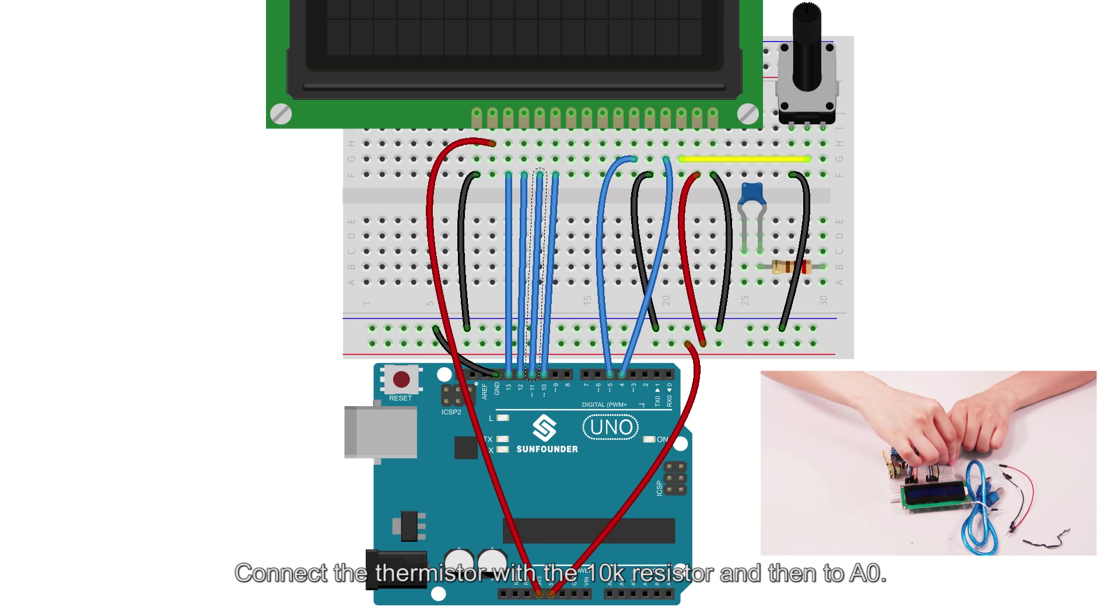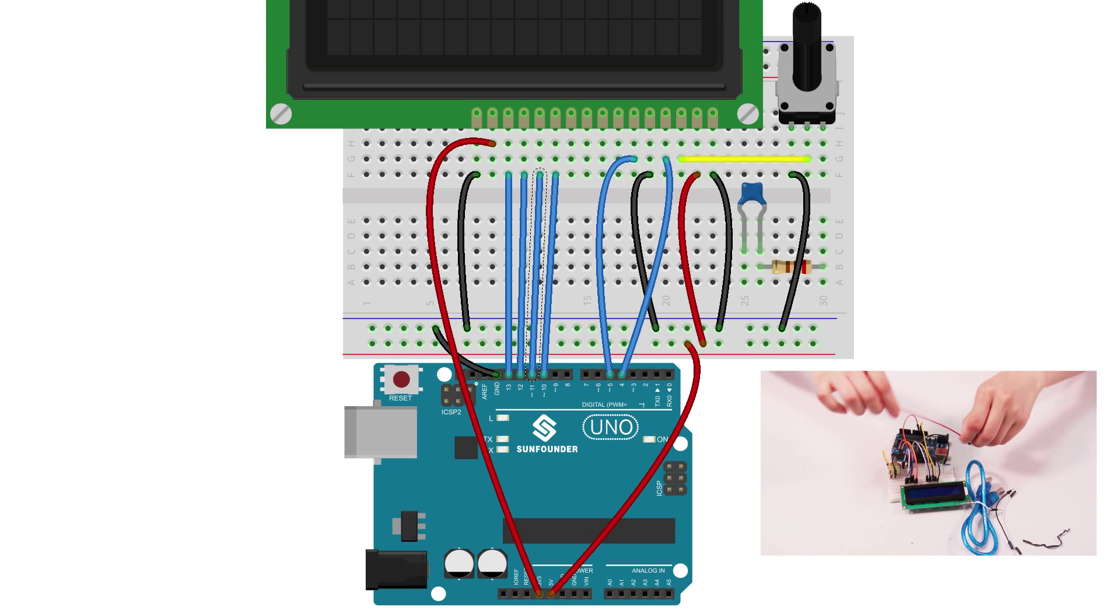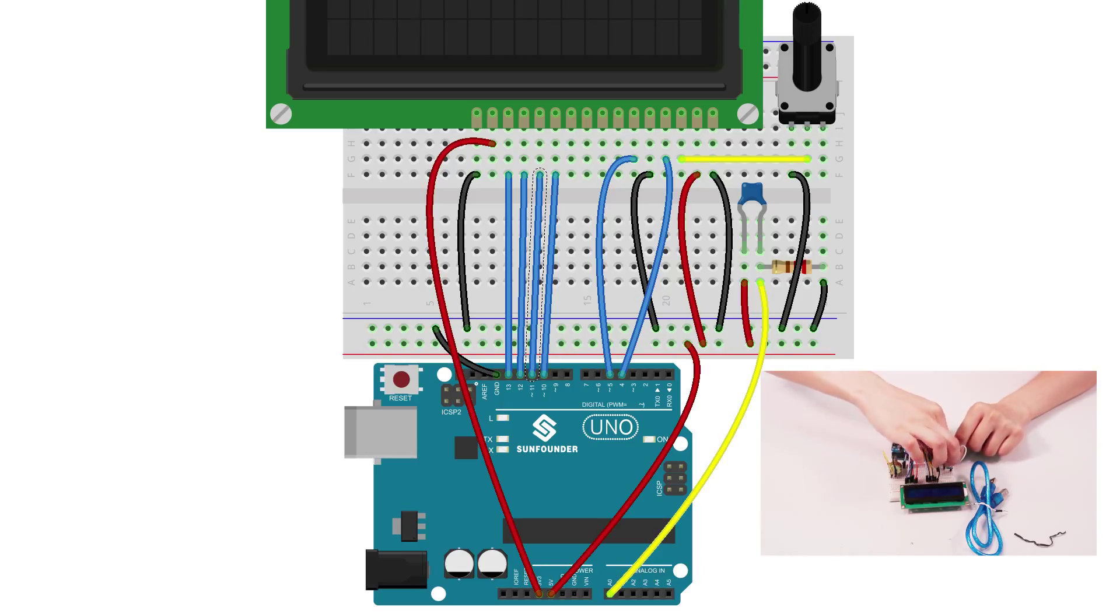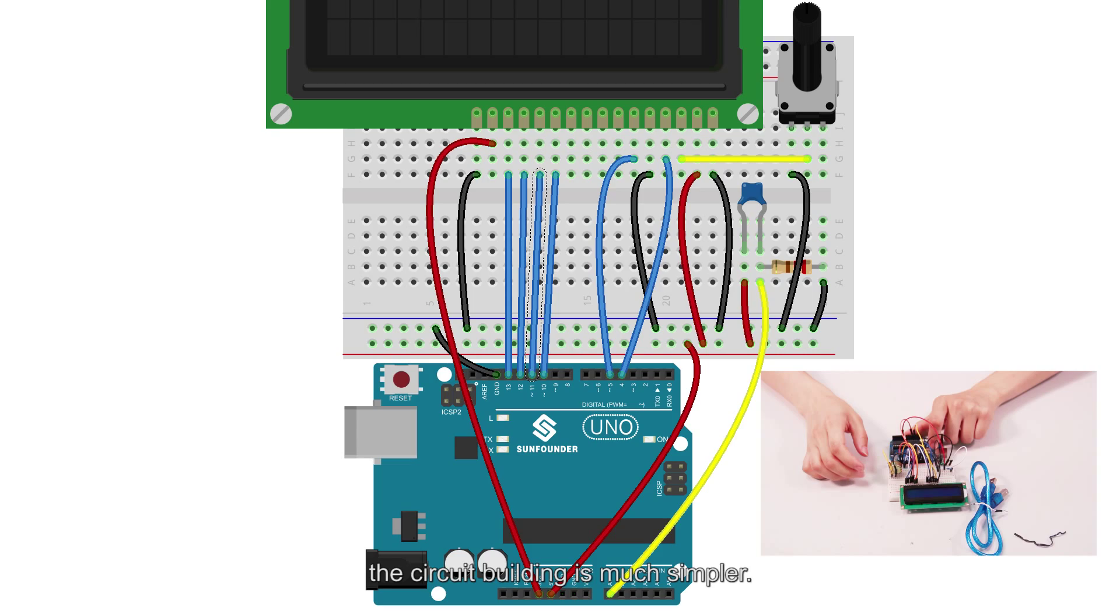Connect the thermistor with the 10K resistor and then to A0. Connect the 10K resistor to GND and the other pin of the thermistor to 5V. So unlike the principle, the circuit building is much simpler.